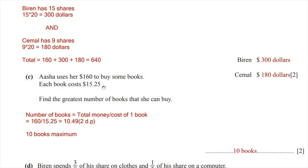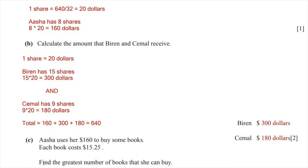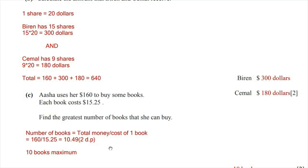Question C states that Asha uses her $160 to buy some books, and each book costs $15.25. Find the greatest number of books she can buy. The total she has is $160, so we divide 160 by 15.25, which gives 10.49. Since the number of books must be a whole number, and 10.49 is less than 11, the maximum number of books she can buy is 10.